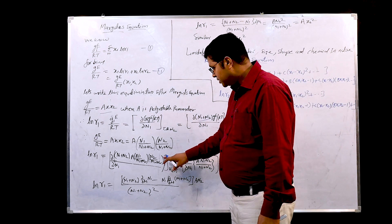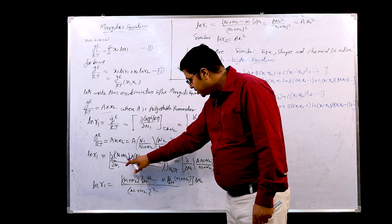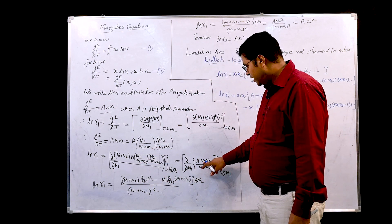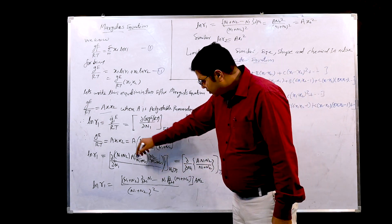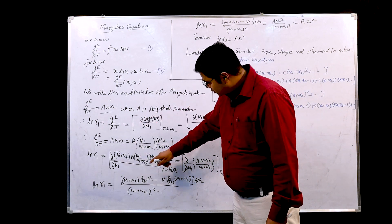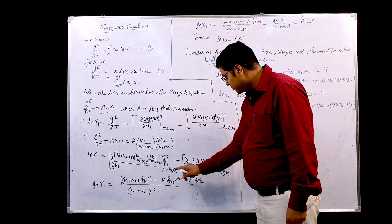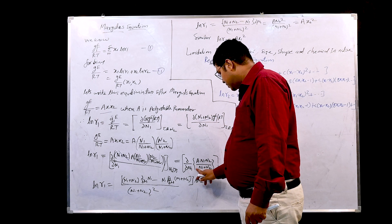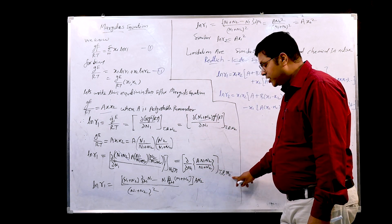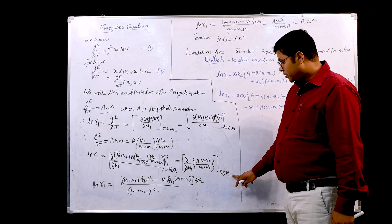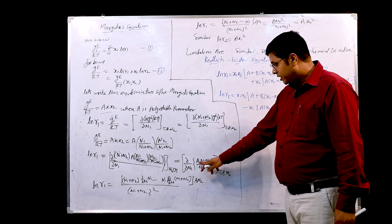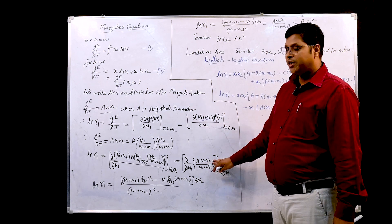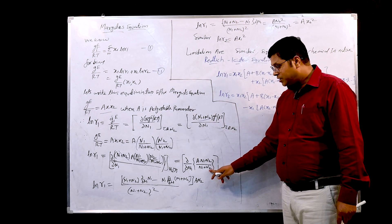When we simplify this one, n1 plus n2 in numerator and denominator both will be cancelled. The term remaining is A n1 n2 upon n1 plus n2. Now, in this case temperature, pressure and n2 are the constant. Because this n2 is constant and A is an adjustable parameter, this is also constant, we take it outside. The term remaining is n2 into n1 upon n1 plus n2.